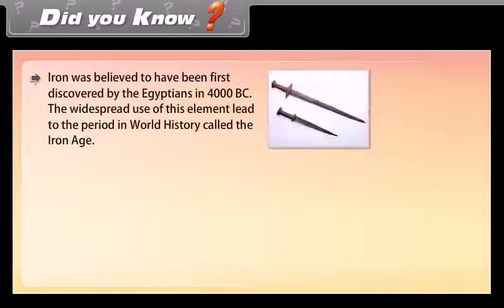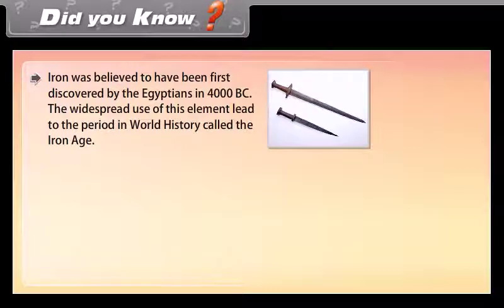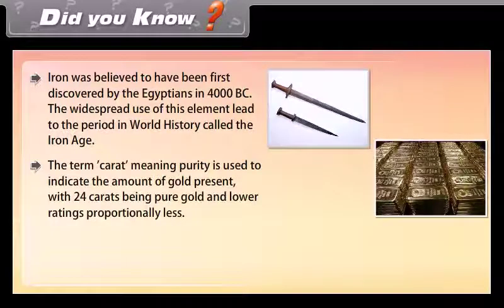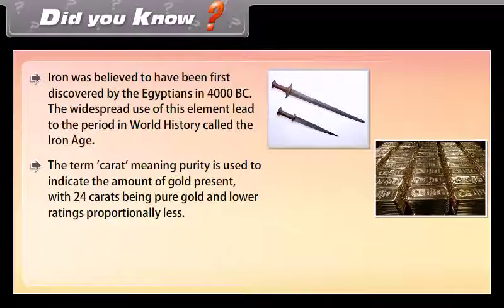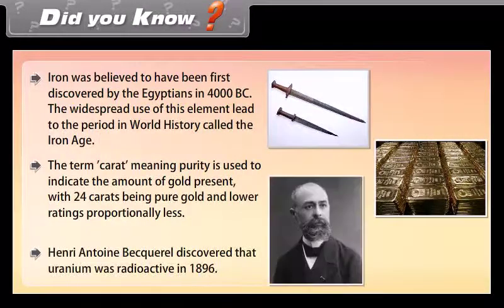Iron was believed to have been first discovered by the Egyptians in 4000 BC, and its widespread use led to the period in world history called the Iron Age. The term 'carat,' meaning purity, is used to indicate the amount of gold present, with 24 carats being pure gold and lower ratings proportionally less. Henry Antoine Becquerel discovered that uranium was radioactive in 1896.